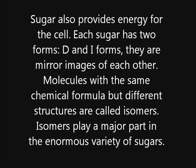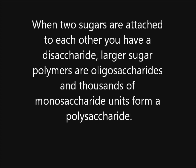Sugar also provides energy for the cell. Each sugar has two forms, D and I forms, which are mirror images of each other. Molecules with the same chemical formula but different structures are called isomers. Isomers play a major part in the enormous variety of sugars. When two sugars are attached to each other, you have a disaccharide.